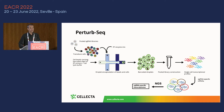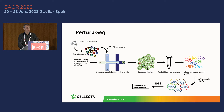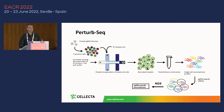Using the Chromium Next system, you can encapsulate single cells and single beads in distinct droplets. These beads carry primers for sgRNA capture, and each bead has a different barcode on the primers. All the RNAs from each single cell are then reverse transcribed and barcoded with a cell-specific barcode — and this includes the sgRNAs.